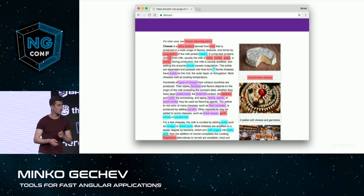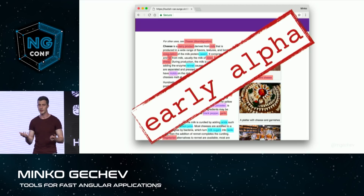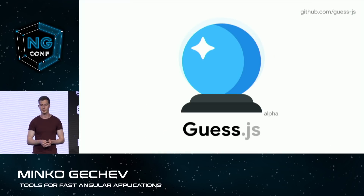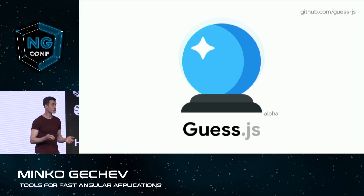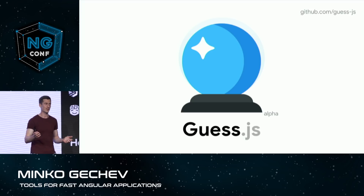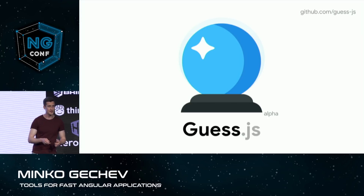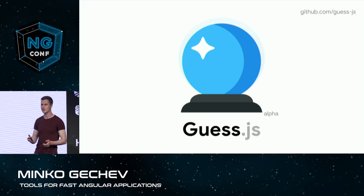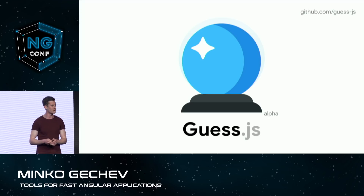This is still in an early preview, although we can already give it a try with Angular. It's available on GitHub at github.com/GuessJS. So we've seen some very cool things: differential loading, lazy loading, predictive prefetching — we're using statistical models to predict where the user may go next based on heuristics.